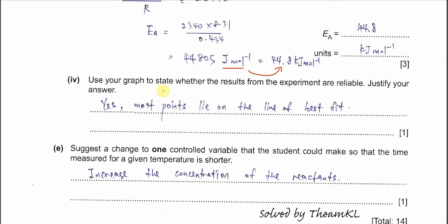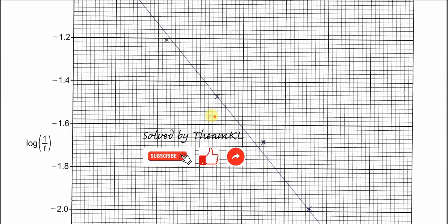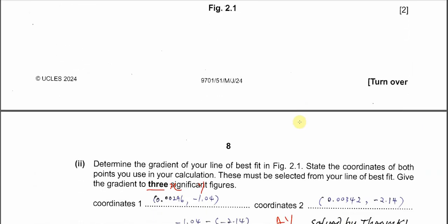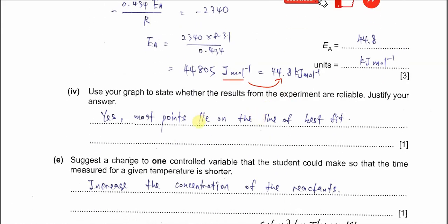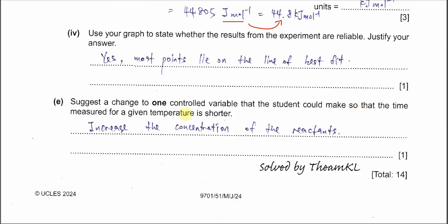Part D4: use your graph to state whether the results are reliable. Yes — most points lie on or close to the line of best fit, so the results are reliable. Part E: suggest a change to one control variable to make the time measured for a given temperature shorter (i.e., make the reaction faster). Use a higher concentration of reactants — when the concentration is higher, the reaction is faster, so the precipitate forms more quickly.